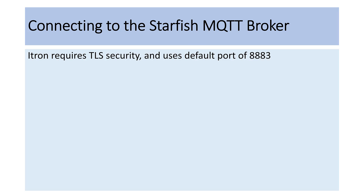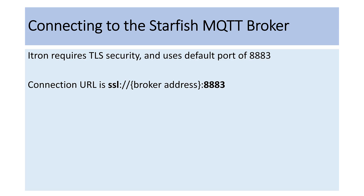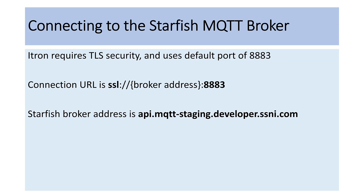A connection to the Starfish MQTT broker needs to specify the correct URI and security settings. ITRON requires TLS security and uses the TLS default port of 8883. The Starfish connection URL is SSL://followed by the broker address followed by the port 8883. The Starfish broker address is api.mqtt-staging.developer.ssni.com.